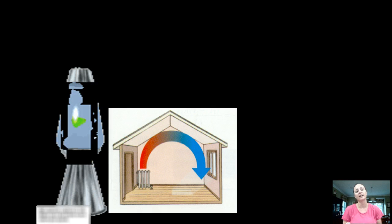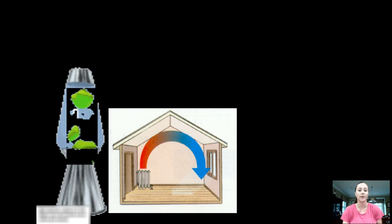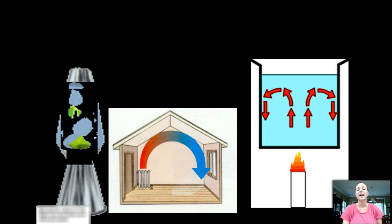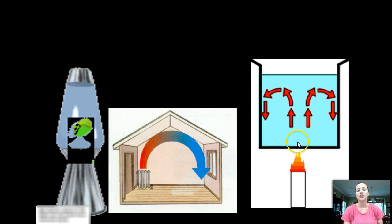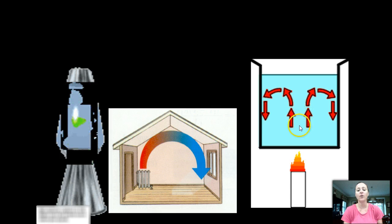So we have a circular pattern that gets created in your home. In this example, we have a beaker set over a candle. Now the heat source is the candle, so it's changing the density of the water that's directly over that heat source.